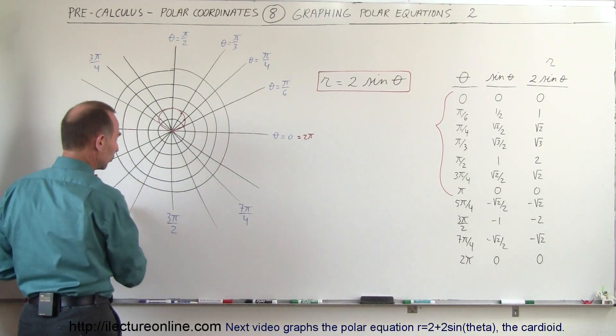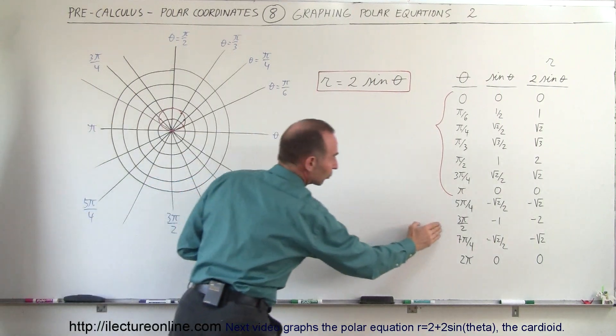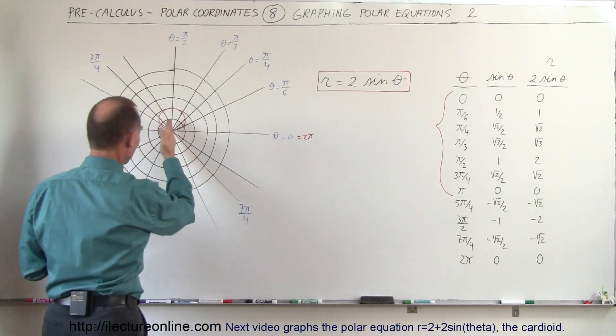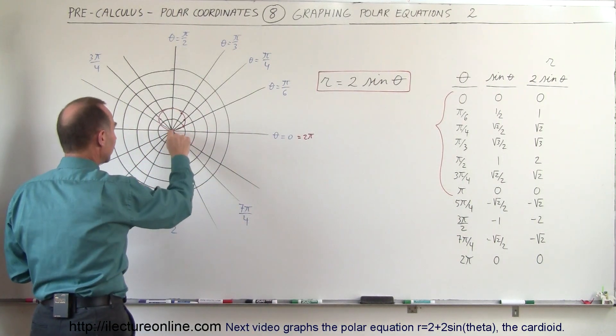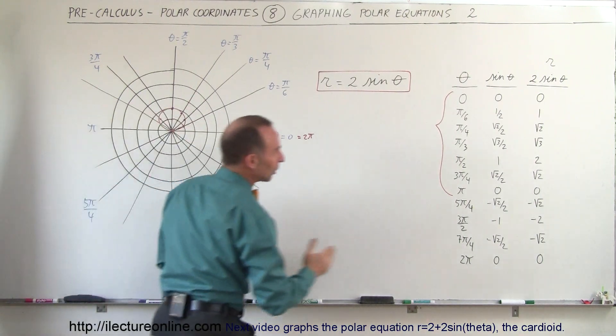Then we go to 3π over 2. At 3π over 2, the number is negative 2. So when we are in this direction, it's negative 2, so we're going to be back over here.